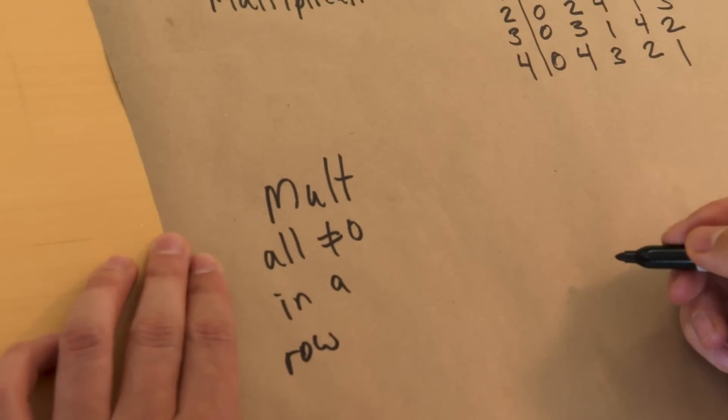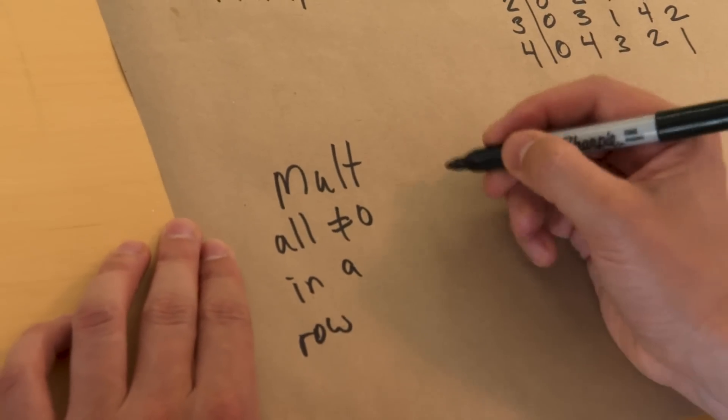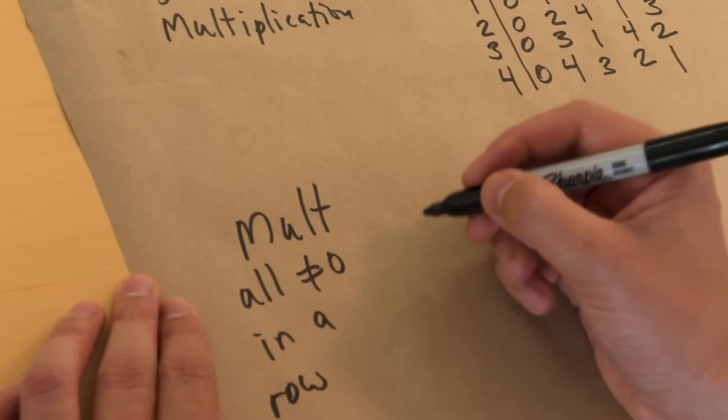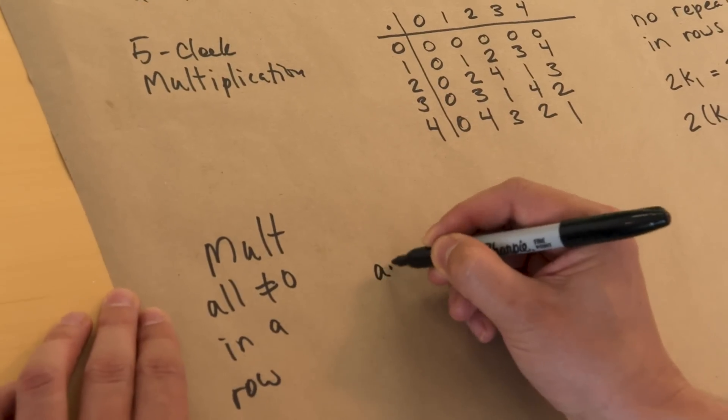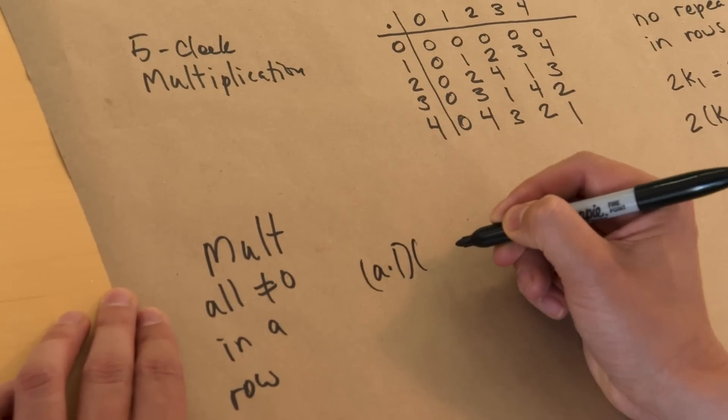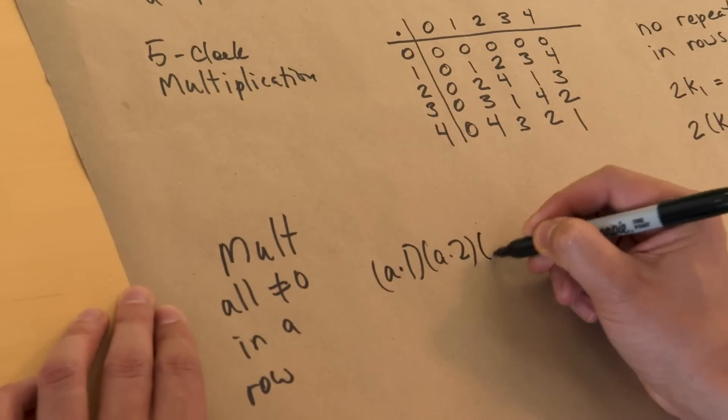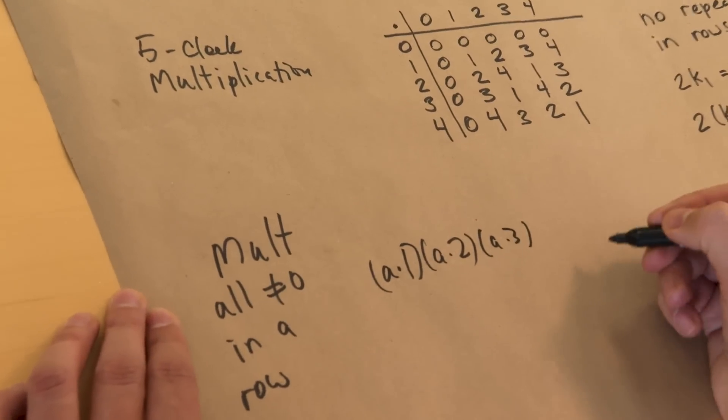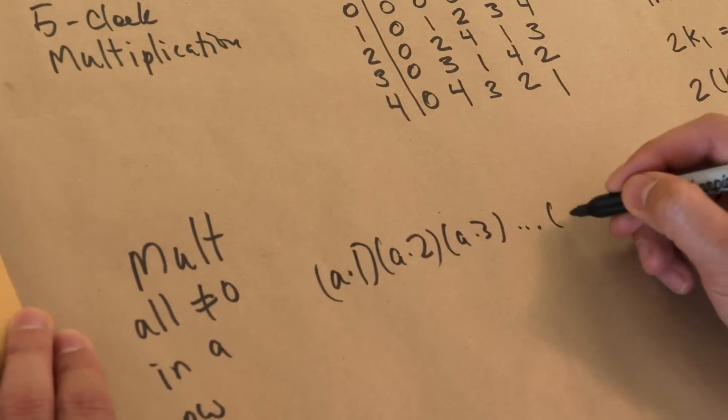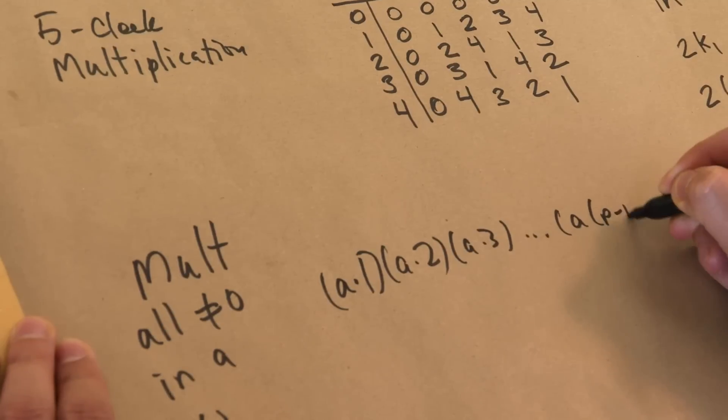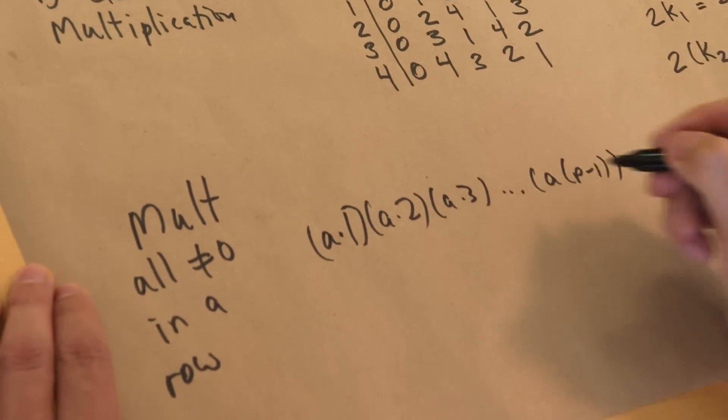So if I multiply all the non-zero entries in a row, on the one hand that's going to be, well, let's say we're looking at the ath row, so I've got A times 1 is the first entry that's non-zero, then A times 2, A times 3. And the way I've rigged it, I'll go A times P minus 1.